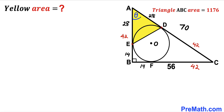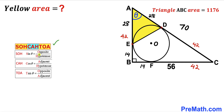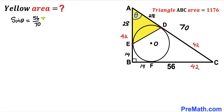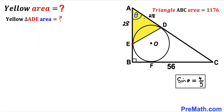Let's label angle BAC as theta. Using SOH-CAH-TOA, sine of theta equals opposite over hypotenuse. The opposite side is BC equals 56 and the hypotenuse is AC equals 70. So sine of theta equals 56 divided by 70, which simplifies by dividing numerator and denominator by 14 to give 4 over 5.